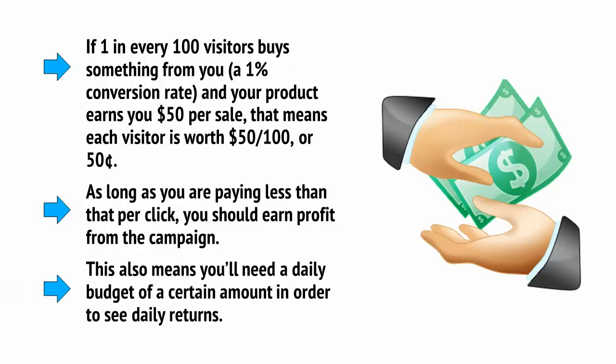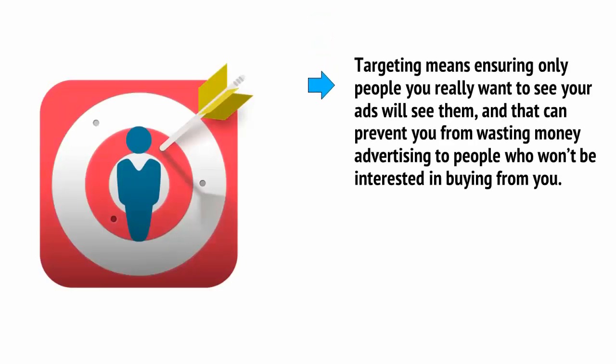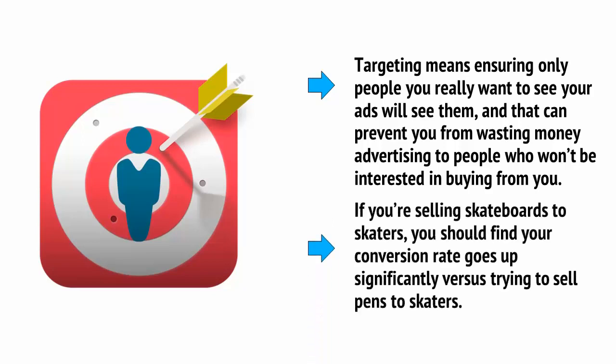This also means you'll need a daily budget of a certain amount in order to see daily returns. There is another great benefit to PPC advertising, too — it allows you to target specific types of visitors very precisely. Targeting means ensuring only people you really want to see your ads will see them, and that can prevent you from wasting money advertising to people who won't be interested in buying from you. If you're selling skateboards to skaters, you should find your conversion rate goes up significantly versus trying to sell pens to skaters.